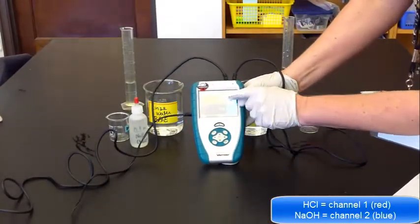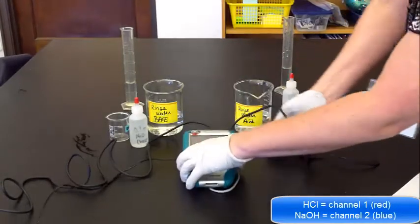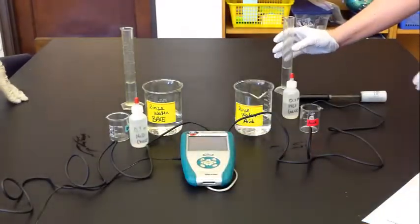And then it will display—it will say channel 1, and usually red acid, red base blue. People remember that. Now we have our electrodes.